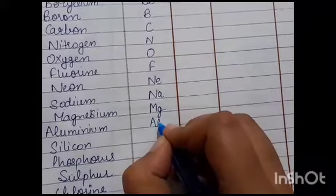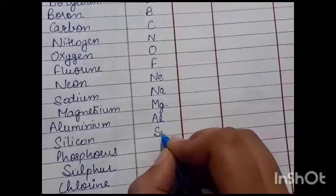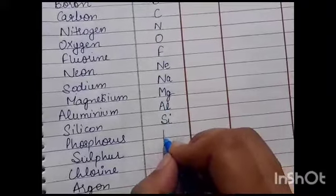Aluminium is capital A, L. Silicon is Si. Phosphorus is P.